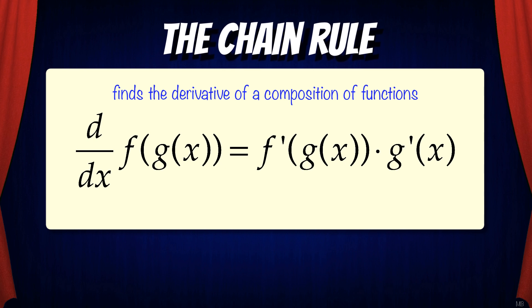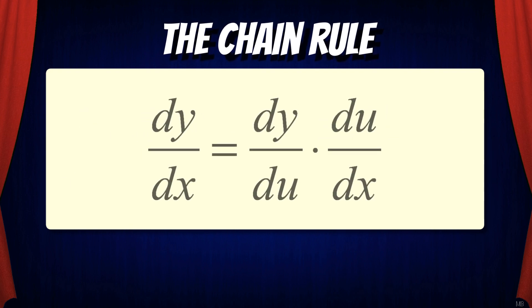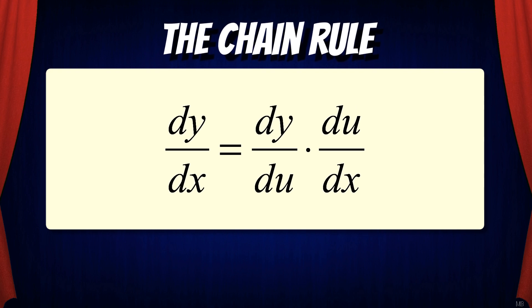If our function is f of g of x, the derivative is f prime of g of x times g prime of x. But there's another form of the chain rule which says dy/dx equals dy/du times du/dx. In this video we're going to talk about how to find derivatives using this form of the chain rule.